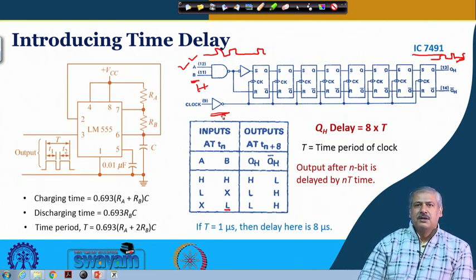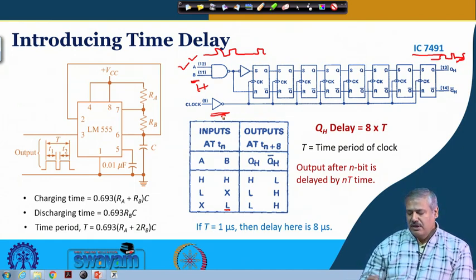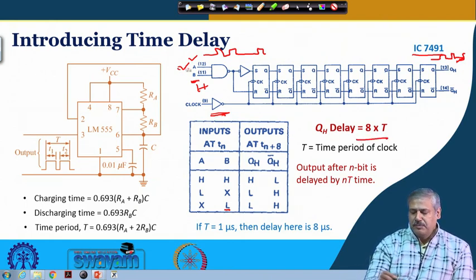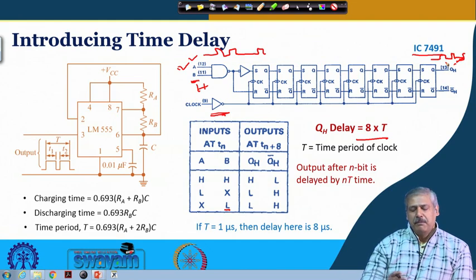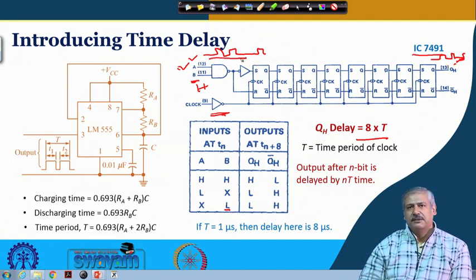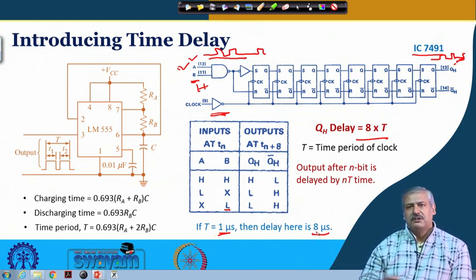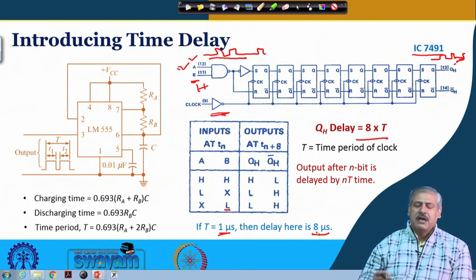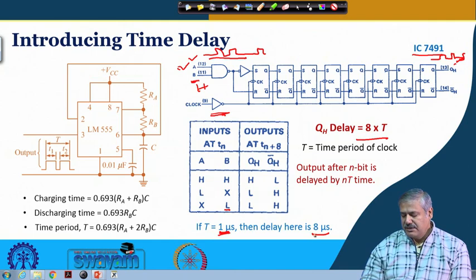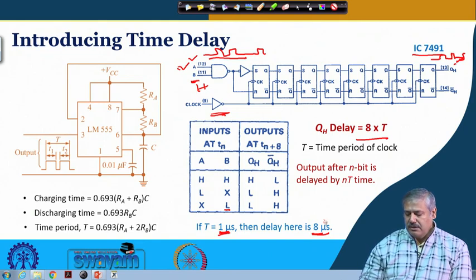The clock time period multiplied by the number of flip-flop units in the shift register gives the total delay between input and output — that is the time by which the binary data stream is delayed. If the clock time period is 1 microsecond, with 8 flip-flops we get 8 microseconds; with 4 flip-flops, 4 microseconds. If the clock period is 2 microseconds, the delay will be 16 microseconds.